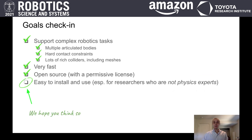Nimble supports multiple articulated rigid bodies, hard contact constraints, and lots of collider types. It's fast, open source, and we've made a large effort to make it easy to use, and we hope that you feel that it is.